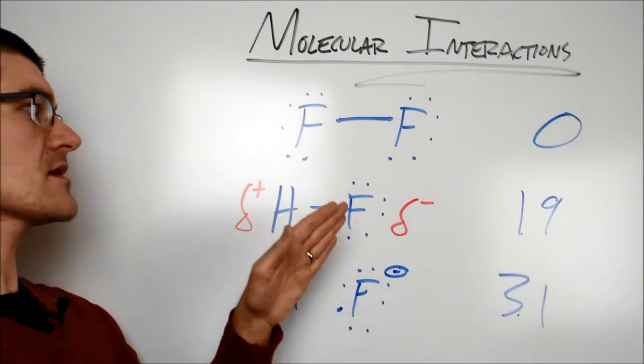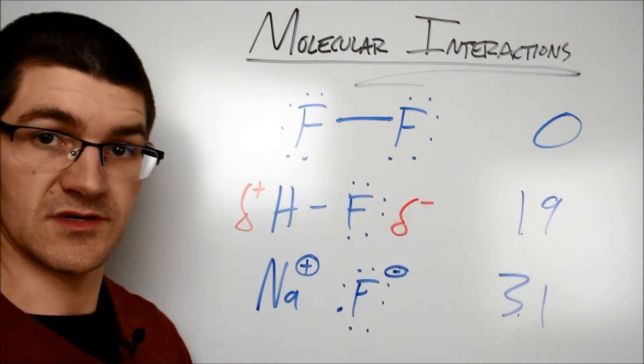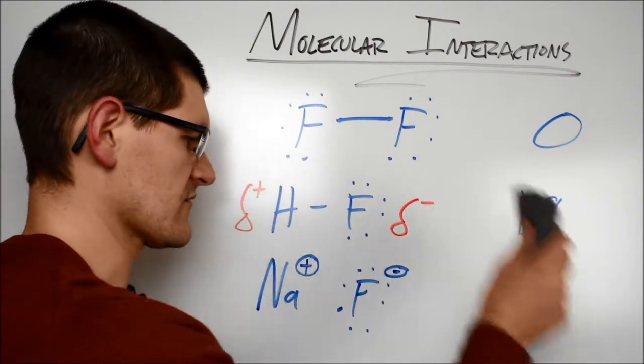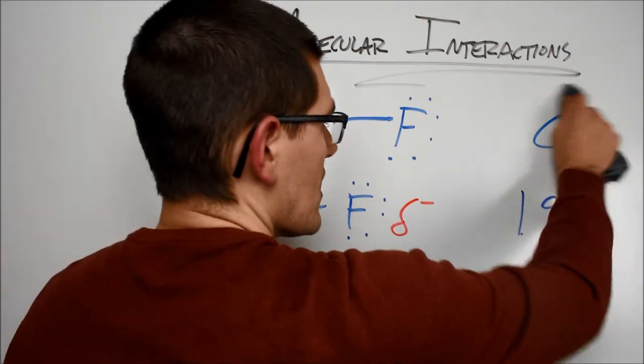Okay? So we have nonpolar covalent, polar covalent, and ionic bonds. Now going back to the hydrogen bond example, I have a bond between hydrogen fluorine, hydrogen oxygen, and hydrogen nitrogen. There are two big pieces of this that make the hydrogen bond unique.